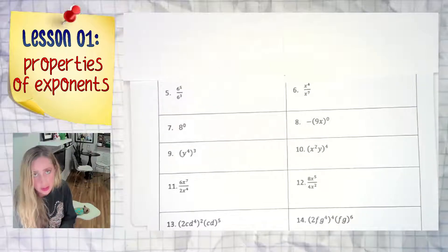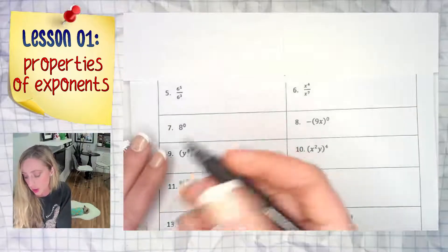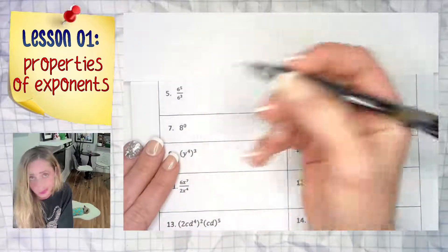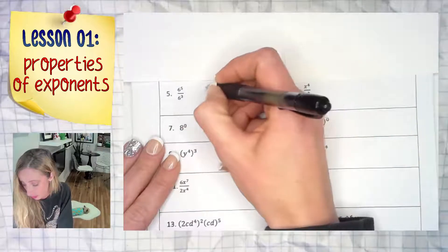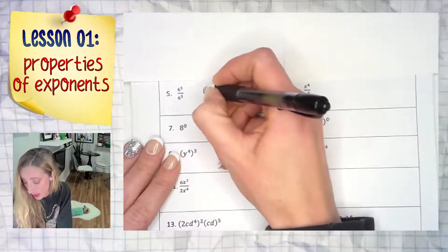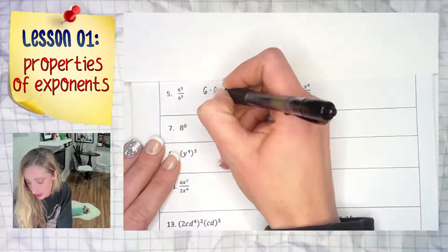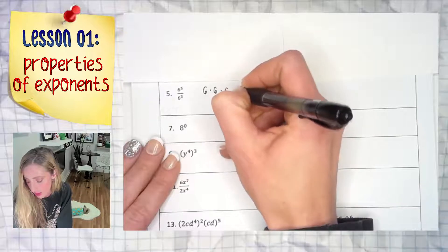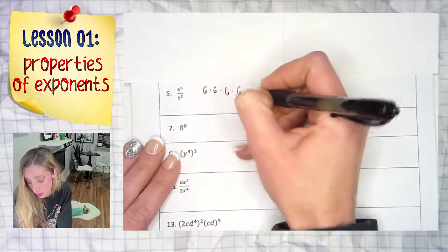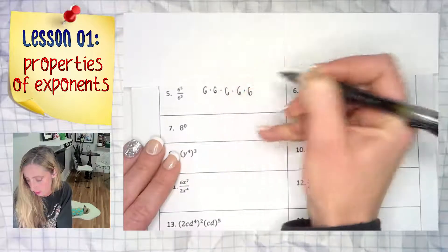Treat it like it were an x to a power. What would you do in this situation? Or when in doubt, write it all the way out. Six to the fifth is six times six times six times six times six — one, two, three, four, five.